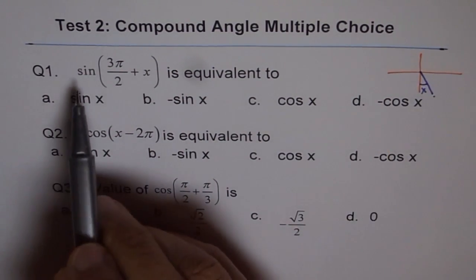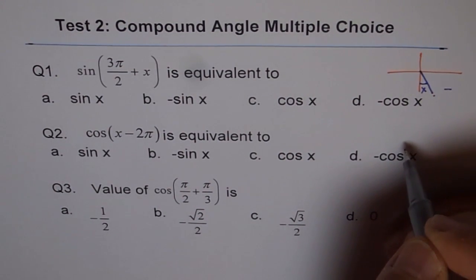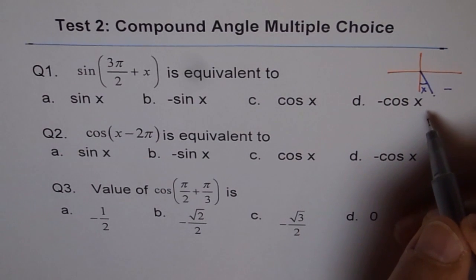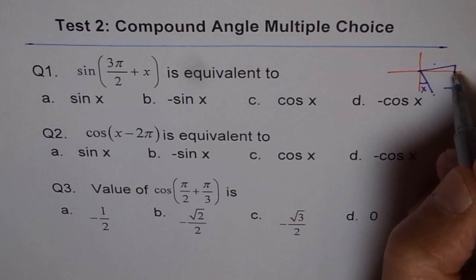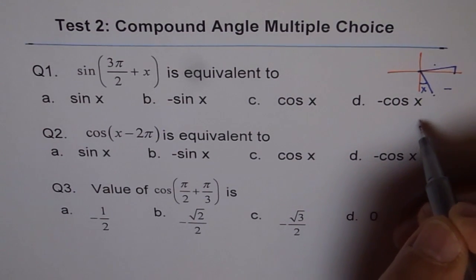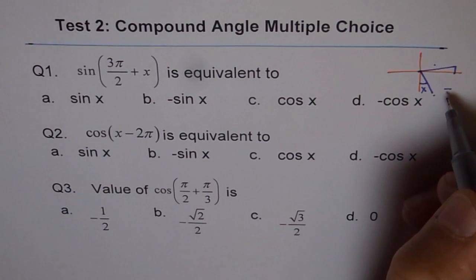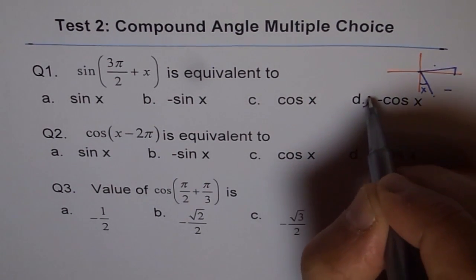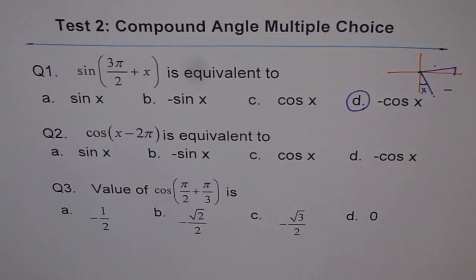Here, sine is negative. So sine is negative here and we are trying to compare it with acute angle x. Acute angle x will be this triangle. Now, so sine changes to cosine, but since sine is negative in quadrant 4, we should have minus cos x as our answer. So the solution is D. Do you understand the concept, how we get the answer?